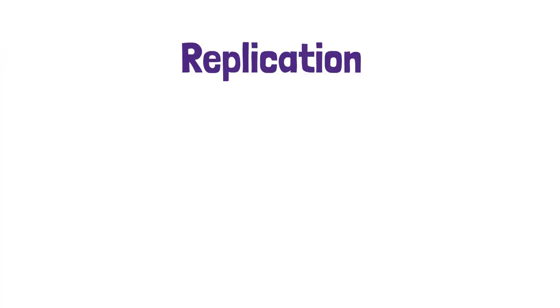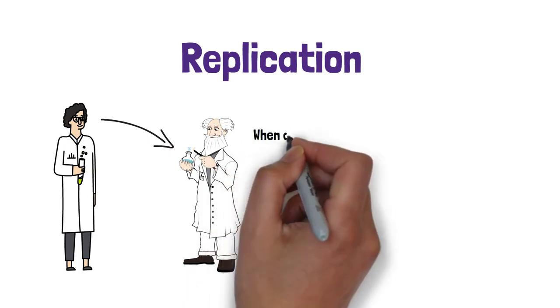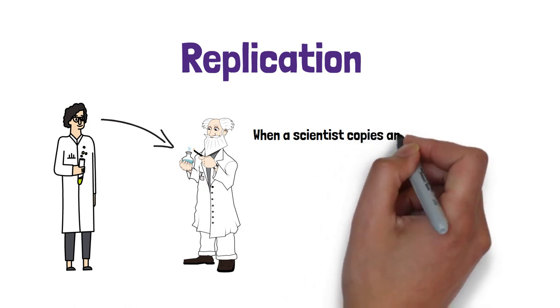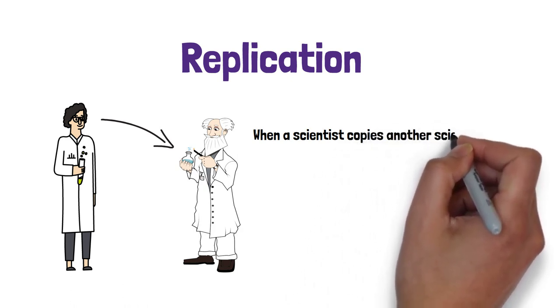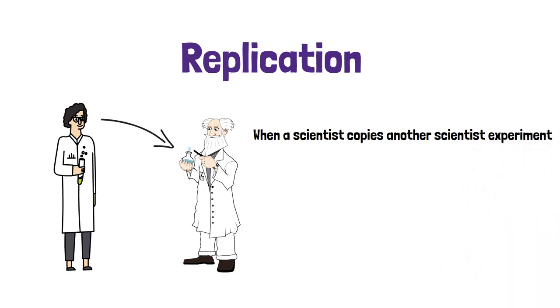Replication is when one scientist copies the experiment of another scientist. The scientist that is copying the experiment will follow the exact experimental procedures to see if he or she will get the same results.